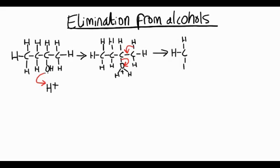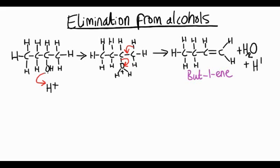We'd have a chain of four carbons in a row, and the double bond would be between the end two carbons. Remember, each carbon can have a maximum of four bonds. So this is but-1-ene, numbering again from right to left. Also, we've kicked out a molecule of water and a hydrogen ion.